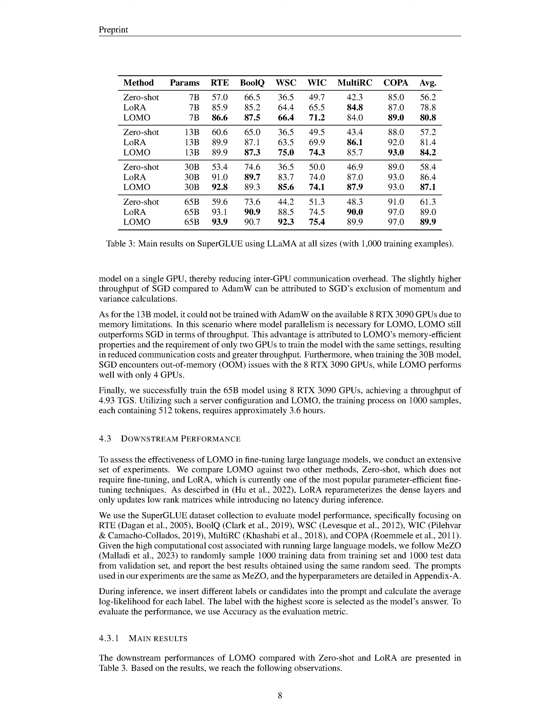This can be largely attributed to LOMO's ability to train the 7 billion parameter model using just one GPU, which cuts down on the time and resources spent on inter-GPU communication. The slightly higher throughput of SGD when compared to AdamW is due to the fact that SGD doesn't calculate momentum and variance. For the 13 billion parameter model, we could not use AdamW to train it on the 8 RTX 3090 GPUs due to memory restrictions, but even with model parallelism, LOMO still had higher throughput than SGD.